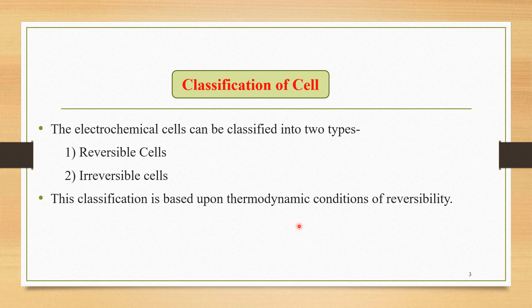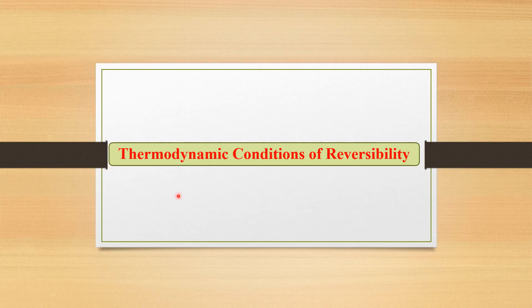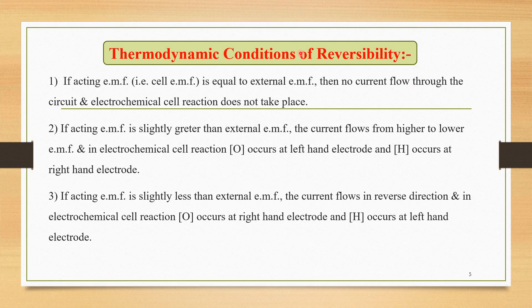We must know what is meant by these thermodynamic conditions of reversibility. There are some important thermodynamic conditions of reversibility. On the basis of that, we can classify the given cell either as a reversible or as an irreversible. So these are the three important thermodynamic conditions.